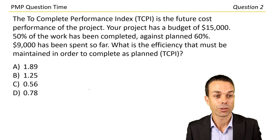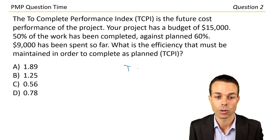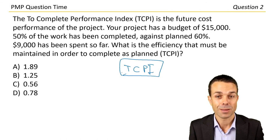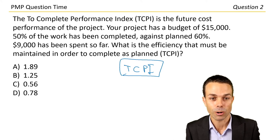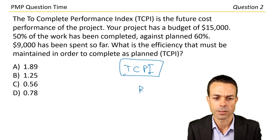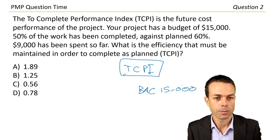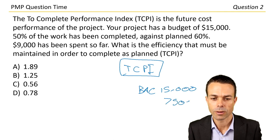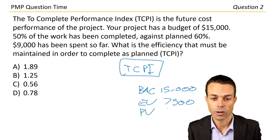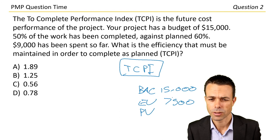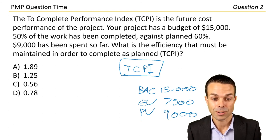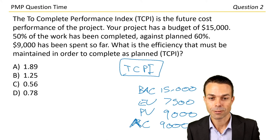Question two: the To-Complete Performance Index, TCPI. This looks much more like a mathematics one — I love mathematics ones. It's the future cost performance of the project. Your project has a budget of $15,000 — that's our budget at completion. 50% has been completed, so $7,500 is the earned value. Planned value is 60%, and 60% of $15,000 is $9,000 — so $9,000 is our actual cost. What is the efficiency that must be maintained in order to complete as planned — the To-Complete Performance Index?